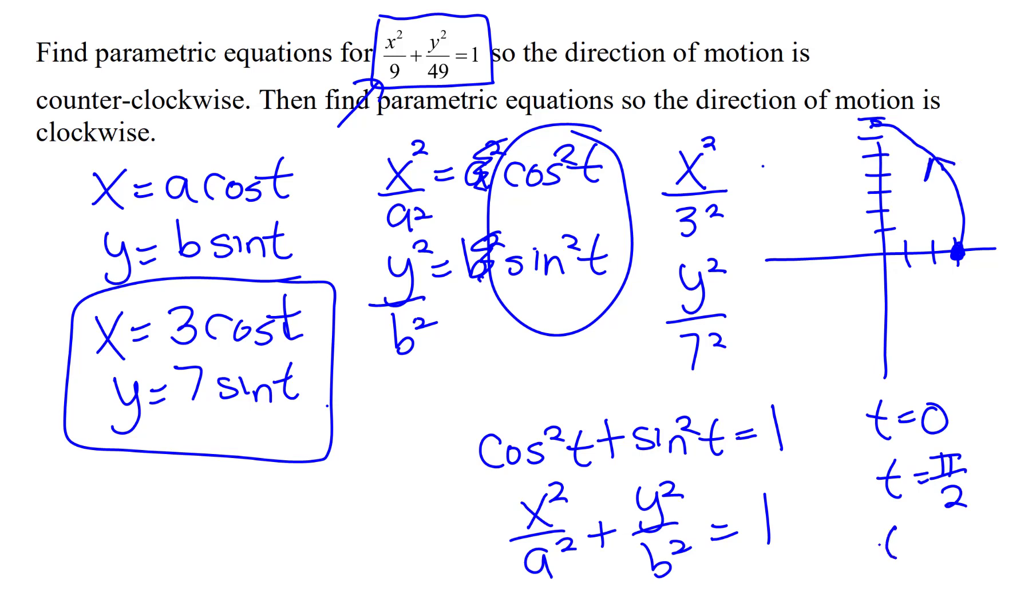If I similarly let t be π, I would have negative 3 and 0, and it would continue around like this. And then if I let it be 3π/2, I would have 0 and negative 7. So it continues like this and then back around. So this first one is the answer to going counterclockwise.